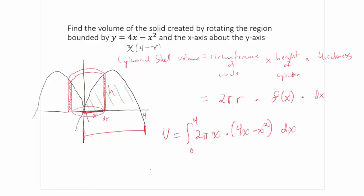Simplifying, I bring the 2π outside and get the integral from 0 to 4 of 4x squared minus x cubed dx. Calculating this gives 128π/3. So when it would be difficult or impossible to find the outer and inner radii for the disk/washer method, we can use the cylindrical shell method: take the circumference of a cylinder times its height times its thickness. Drawing a representative cylindrical shell lets us identify the pieces to plug in.